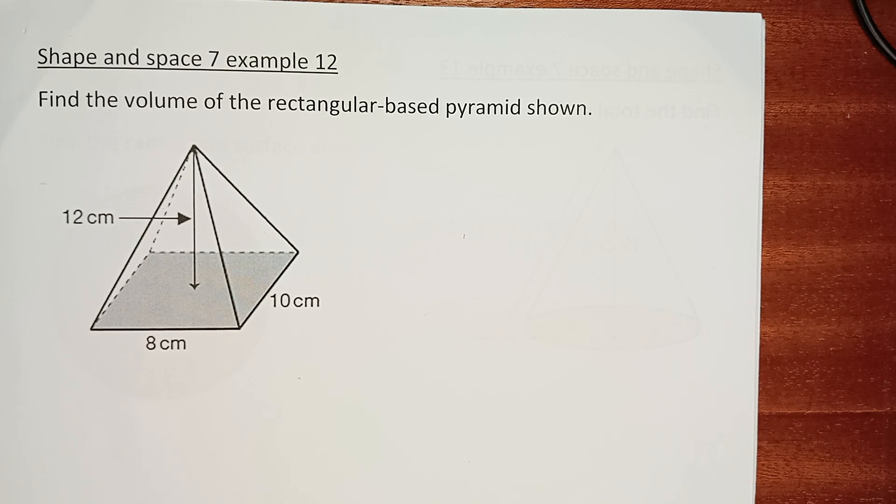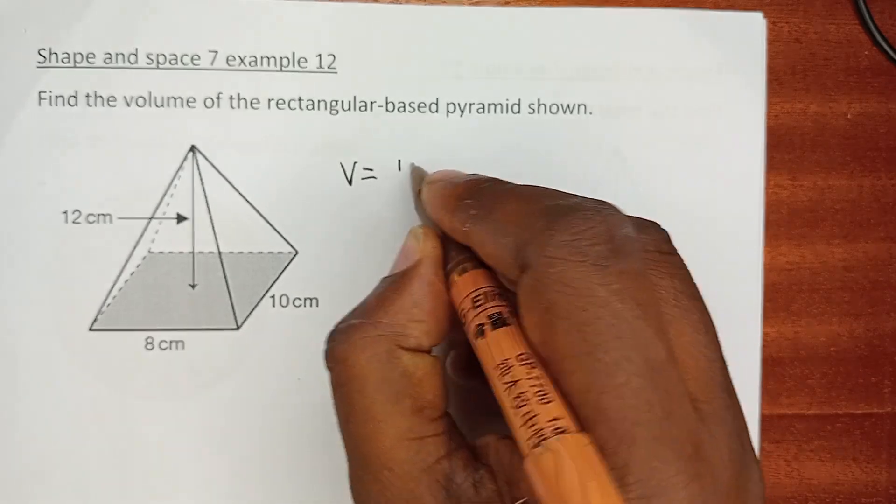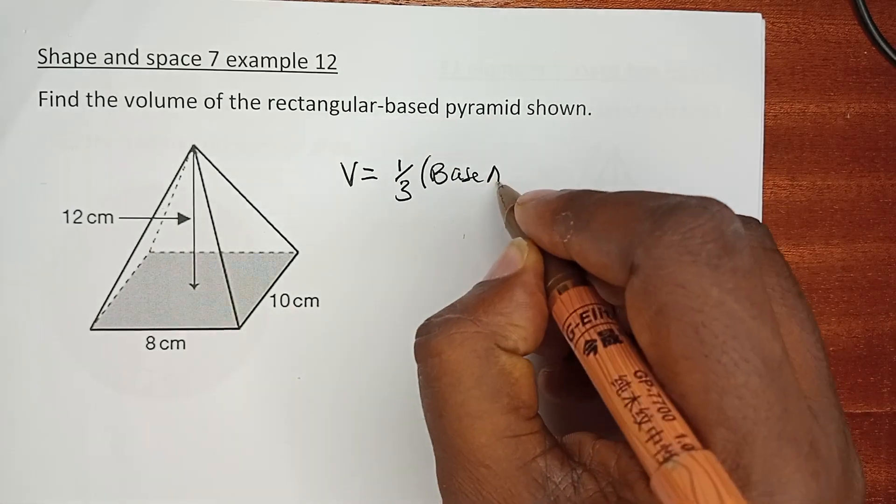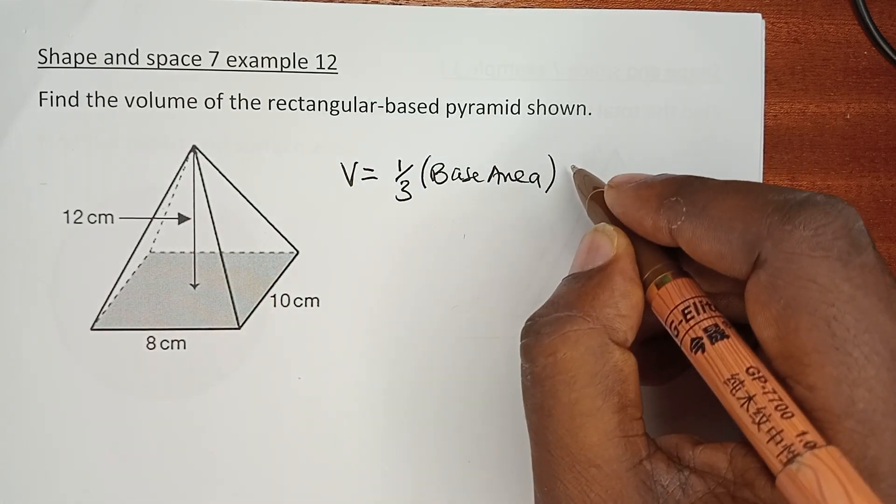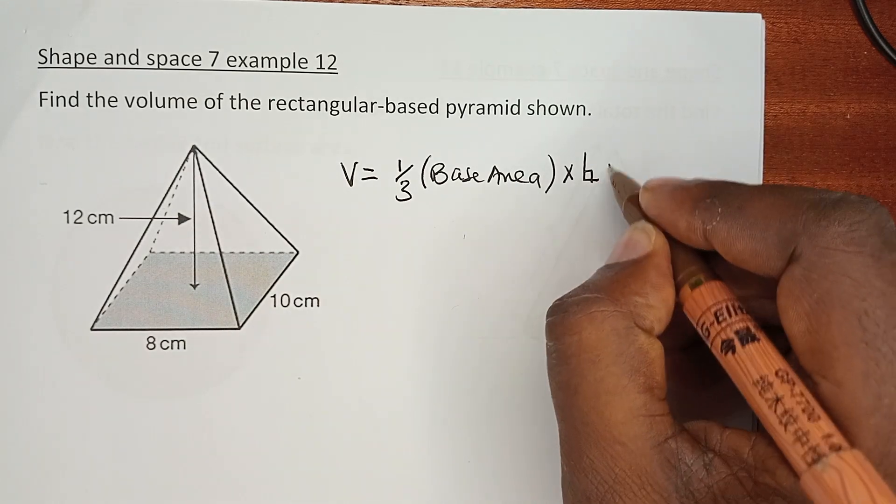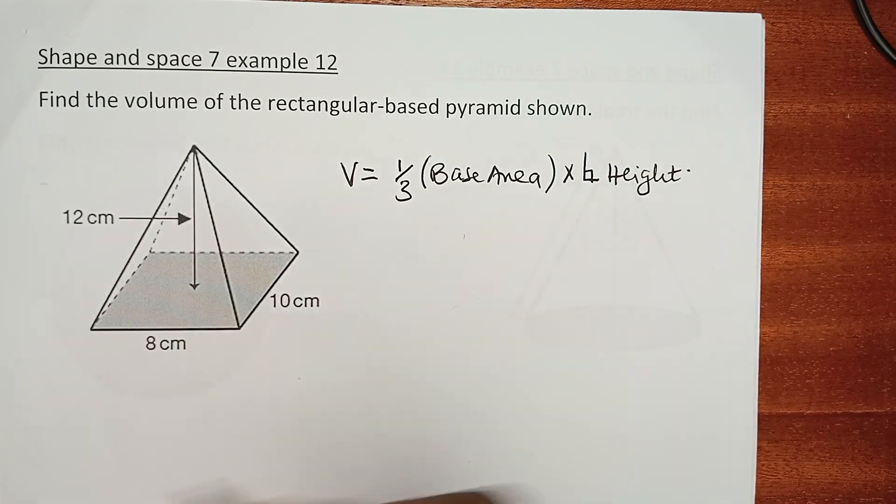We know the volume of a pyramid. We have understood from the previous slide that the volume equals a third of the base area multiplied by the perpendicular height.